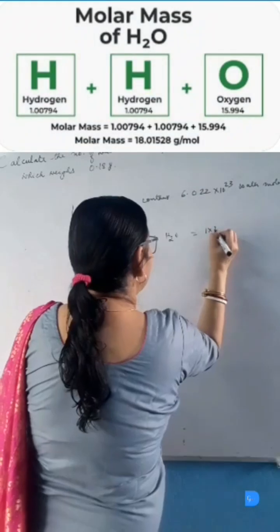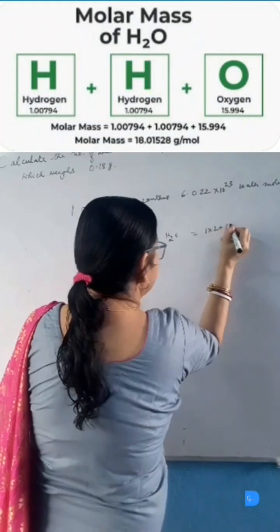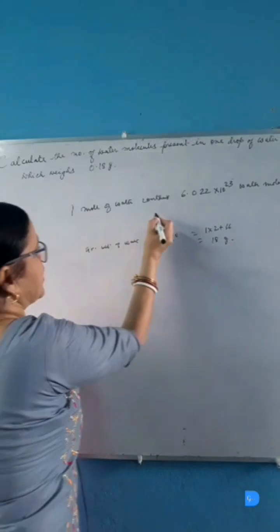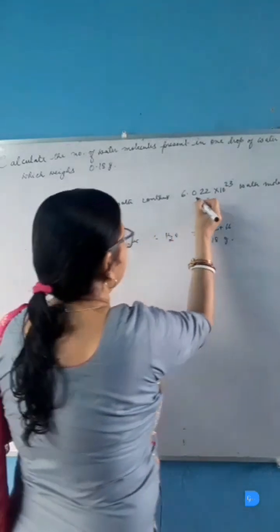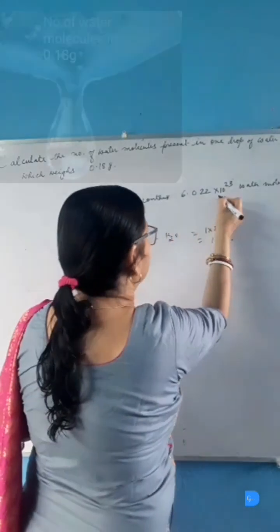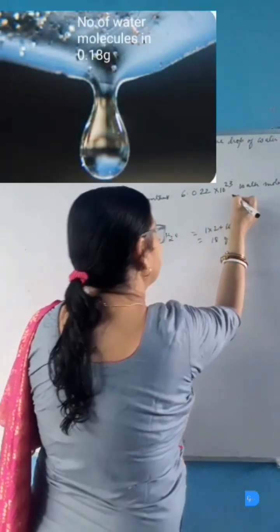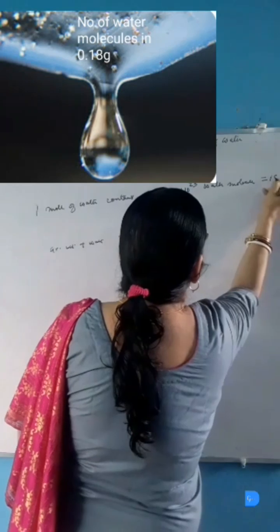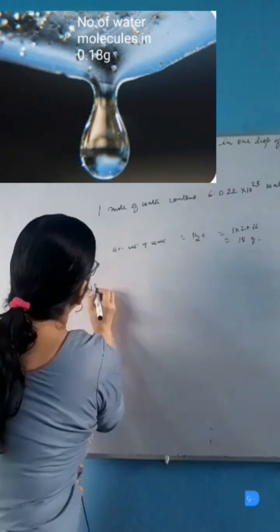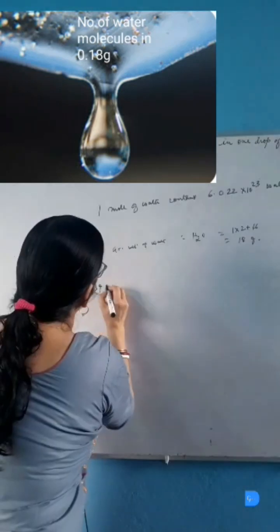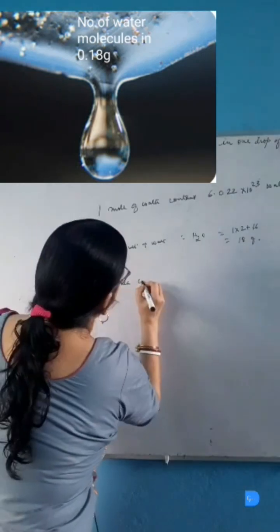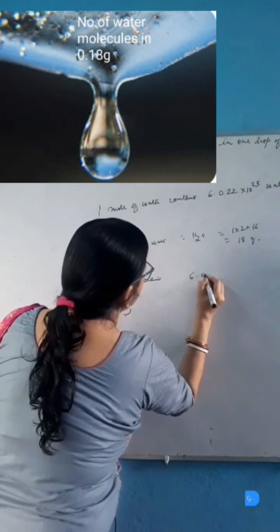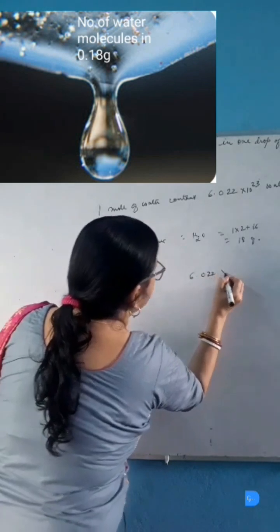1 into 2 plus 16 is equal to 18 gram. One mole of water contains 6.022 into 10 to the power 23 water molecules which weighs 18 gram. We can say that 18 gram of water contains 6.022 into 10 to the power 23 water molecules.